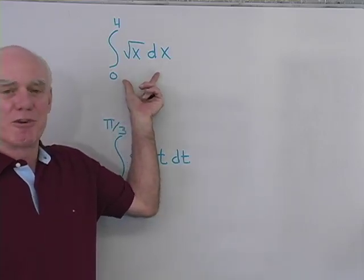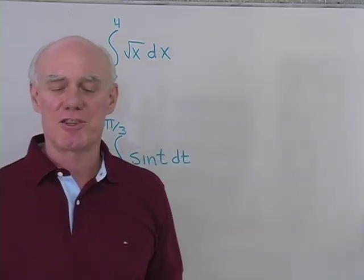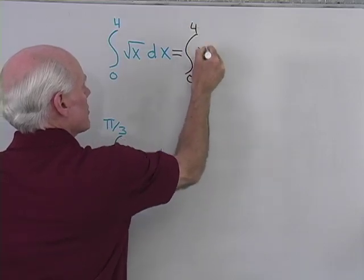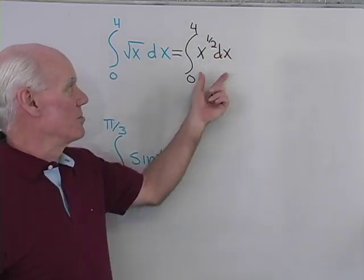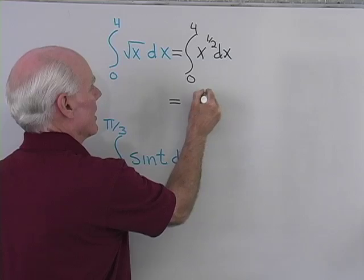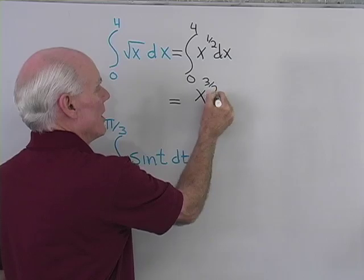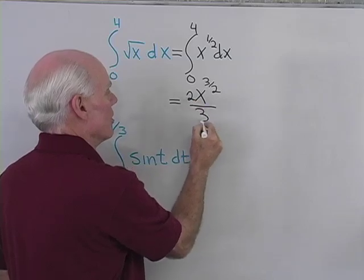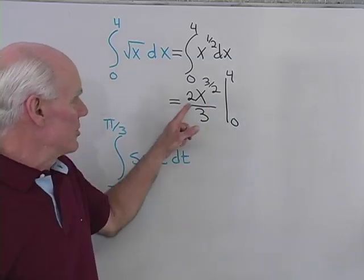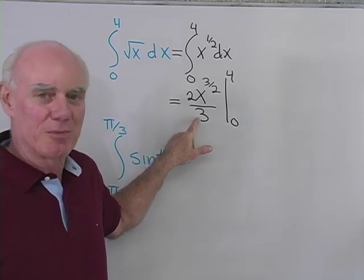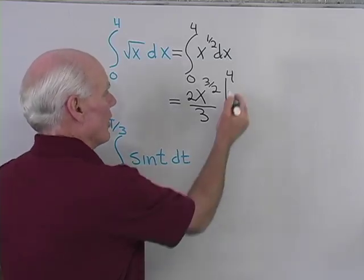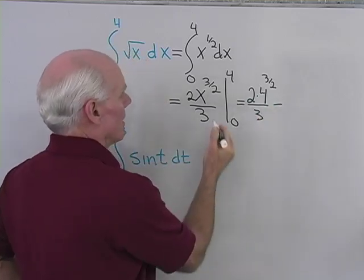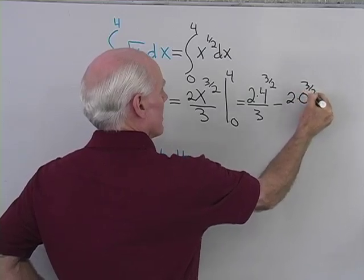Here I have another definite integral: the integral from 0 to 4 of square root of x dx. I don't have a formula for square roots, but I can rewrite it with an exponent. So I change this to the integral from 0 to 4 of x to the 1/2 dx. Now I can use my formula because I have x to some power dx. So I integrate to get x to the 1/2 plus 1, which is x to the 3/2, divided by 3/2. Dividing by 3/2 is the same as multiplying by 2/3, so I write this as 2/3 times x to the 3/2, evaluated from 0 to 4.